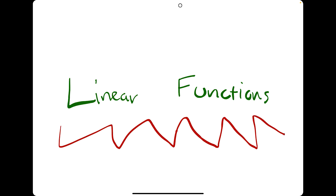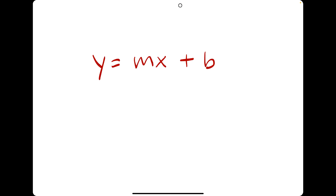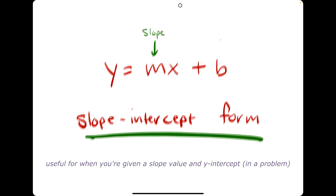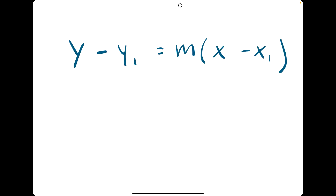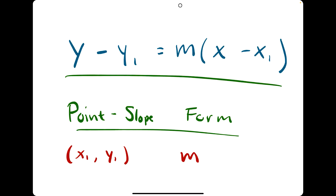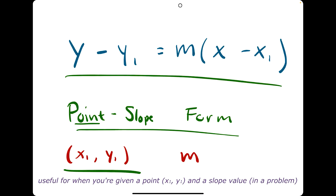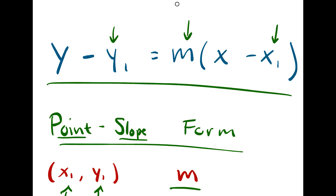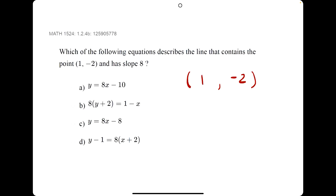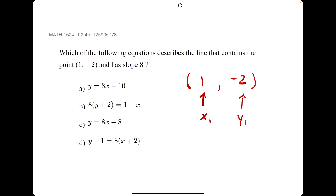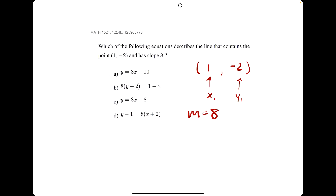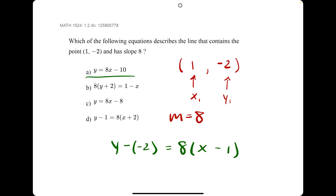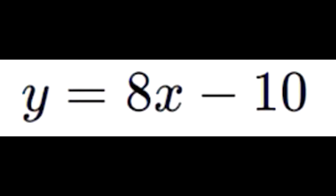Linear functions. There's y equals mx plus b, or slope-intercept form, which is useful if you have a slope and a y-intercept. And then there's point-slope form, useful if you're given an ordered pair or a point and a slope. So x1 goes here, y1 goes here, and m goes here. For example, the 1 is our x1 and the negative 2 is our y1, and the slope is 8. Plugging this in gives us y minus negative 2 equals 8 times x minus 1. Sometimes you might have to rearrange this equation until it matches slope-intercept form.